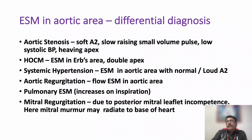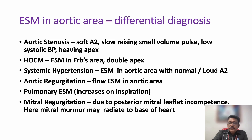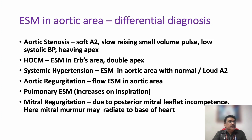An ejection systolic murmur in the aortic area can be due to various conditions — aortic stenosis, HOCM, systemic hypertension, aortic regurgitation producing a flow murmur, pulmonary ejection systolic murmur, or mitral regurgitation with radiation to the base. To differentiate these from true aortic stenosis, look for the peripheral pulse — low volume — and low systolic BP. Low volume pulse, systolic decapitation, ejection systolic murmur, and thrill in the aortic area are the typical features of valvular aortic stenosis.